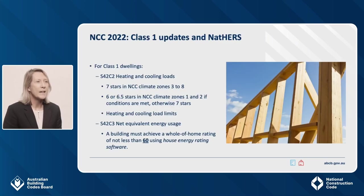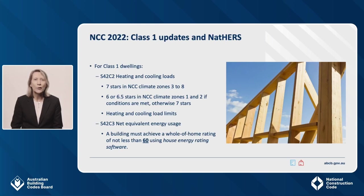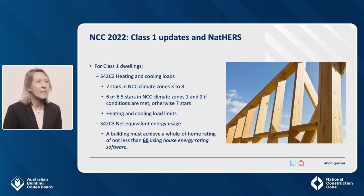For Class 1 buildings, NCC 2022 requires a minimum rating of 7 stars to be achieved, though some areas may be allowed to claim an additional credit. For example, outdoor living areas in climate zones 1 and 2 may claim a half or full star credit if certain conditions are met, reducing the minimum rating to 6 or 6.5 stars. There are also updated heating and cooling load limits that match the increased minimum star rating. The whole-of-home requirements are that you attain a rating of 60 out of 100.